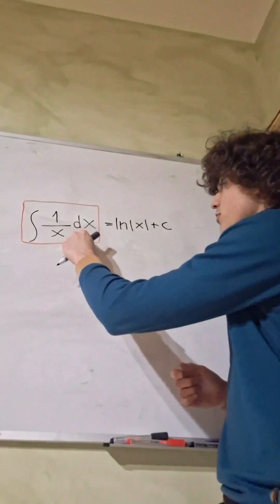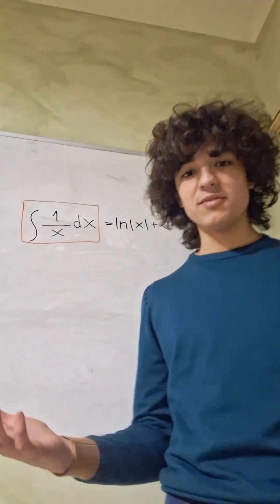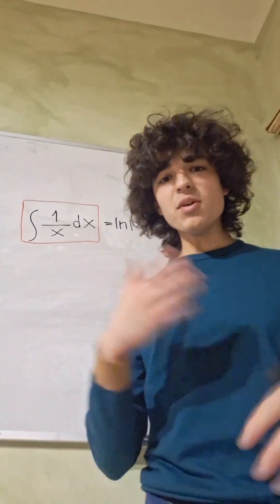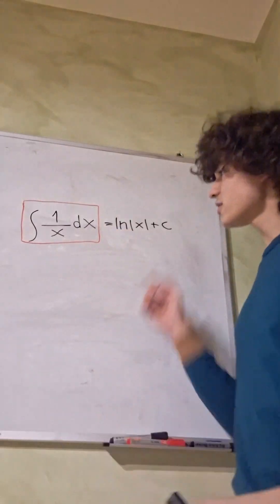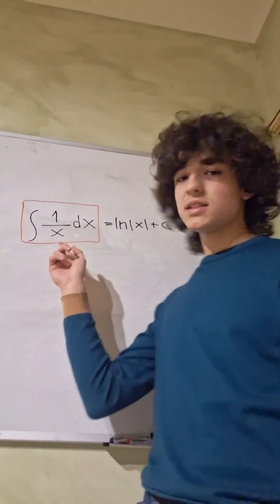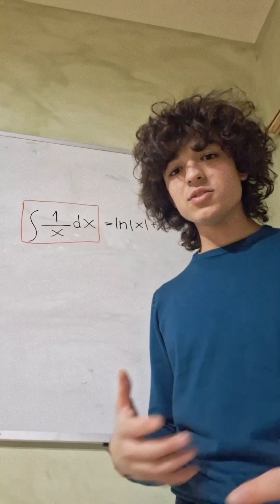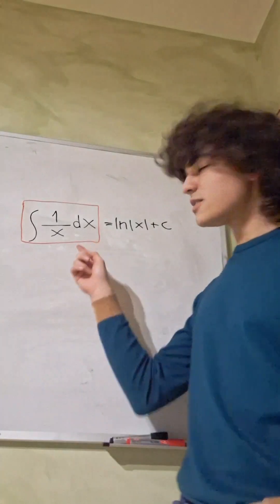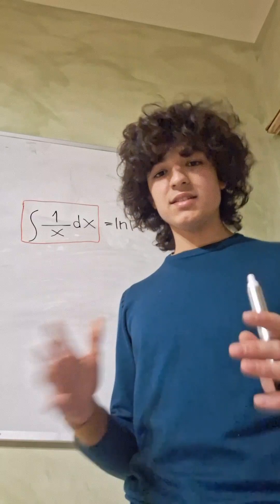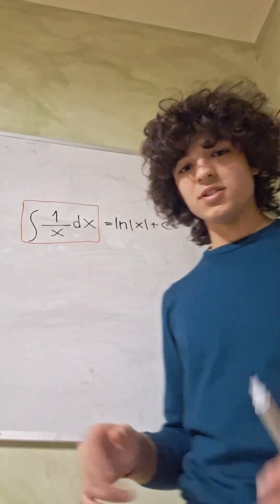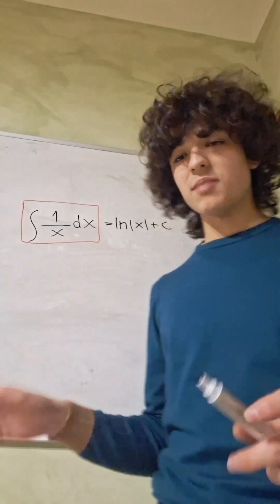We all know that the integral of 1 over x dx equals the natural log of the absolute value of x. We often prove it the other way around: we start with the natural log of x, differentiate it, and get 1 over x. But what if we prove it another way, starting from the integral itself? We're going to do it using a simple substitution, but we have to consider two separate cases.